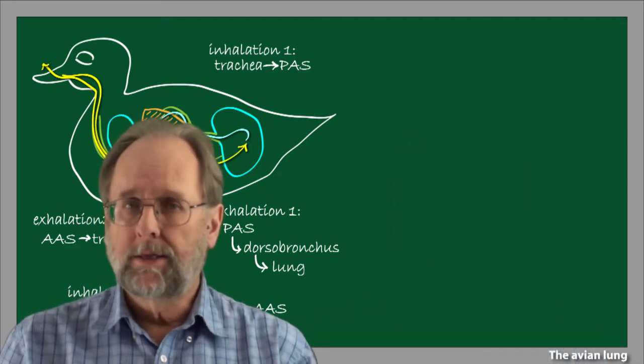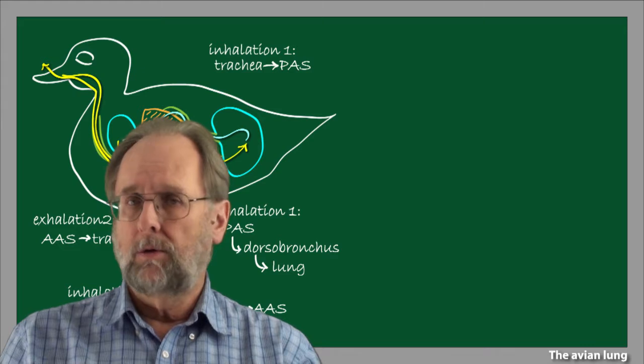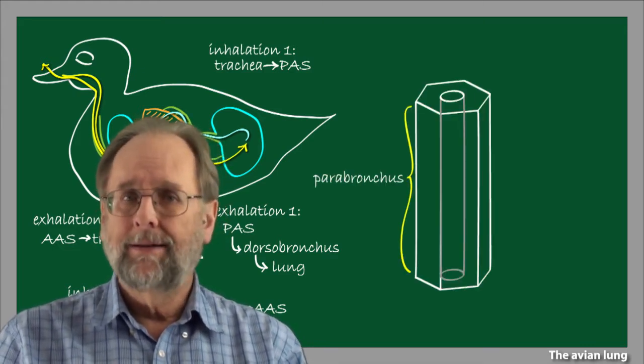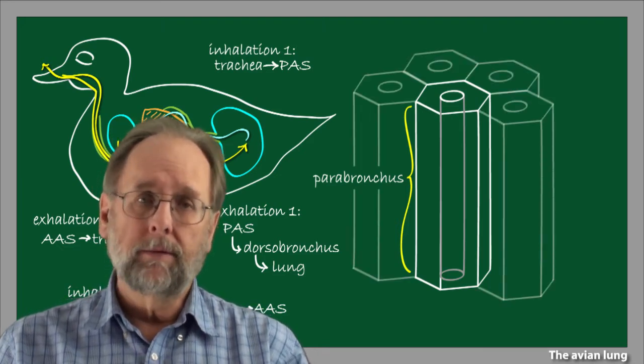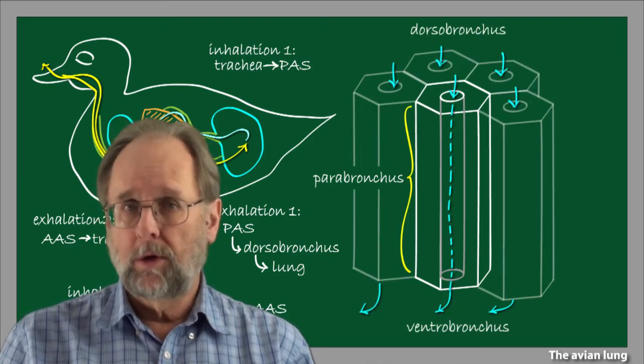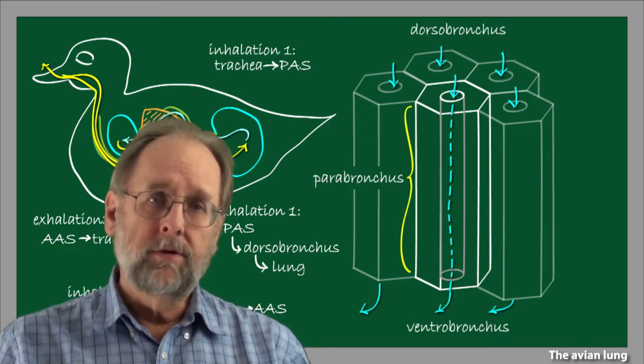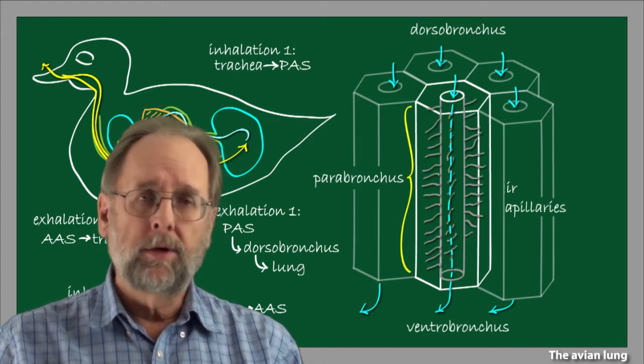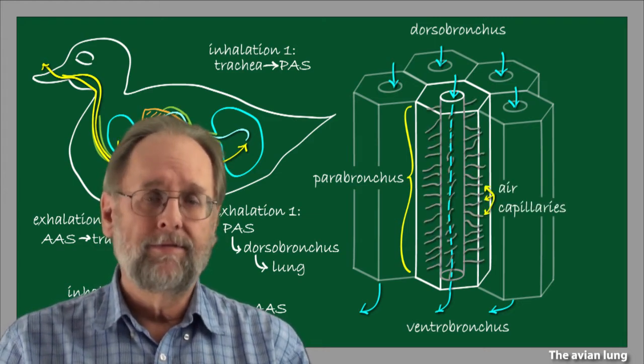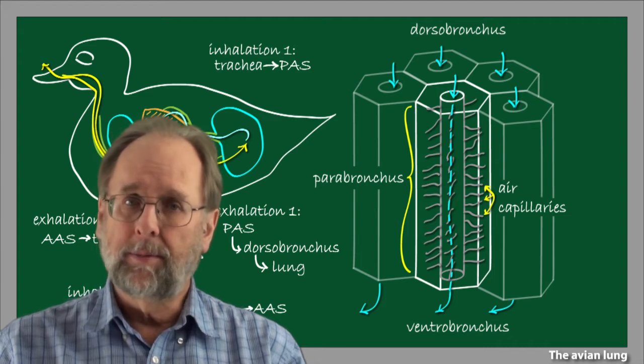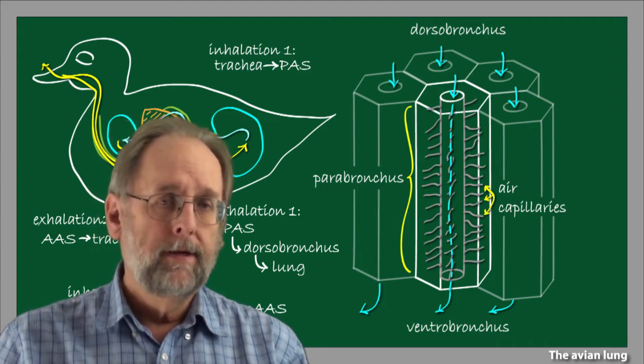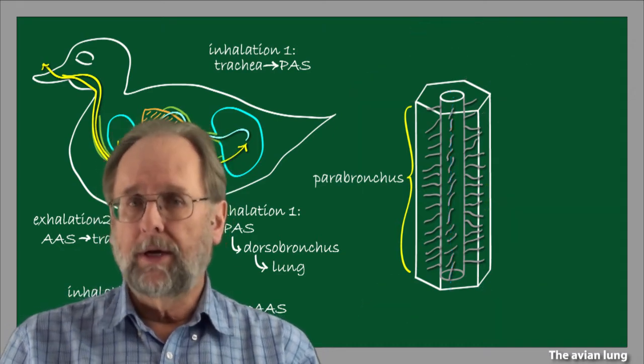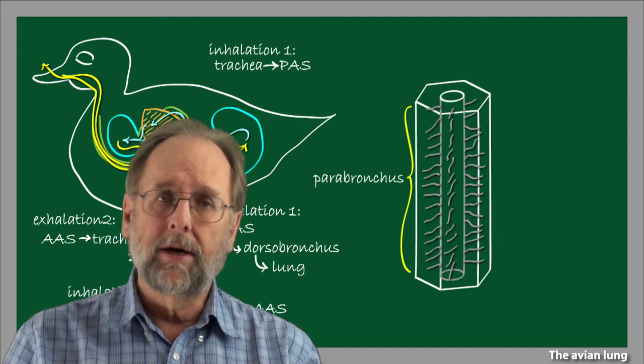The parabronchi are where gas exchange actually takes place, so let's take a closer look at them. Each parabronchus is embedded in an array of other parabronchi. Air flows through them from the dorsal bronchus on top, down through to the ventral bronchus on the bottom. Radiating out from each parabronchial tube is an array of very fine blind-ended tubules known as the air capillaries.